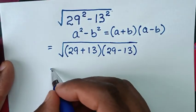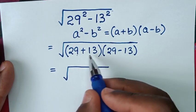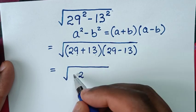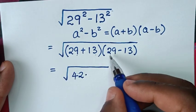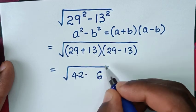Then it will be equal to square root of here 29 plus 13, 9 plus 3 is 12, goes 1, 2 plus 1 is 3 plus 1 is 4, times 29 minus 13, this minus this will be 6, this minus this is 1.